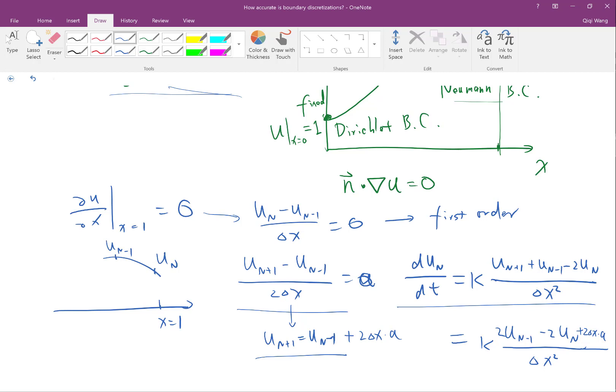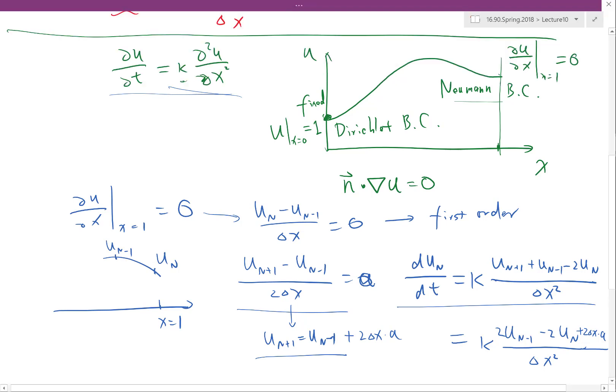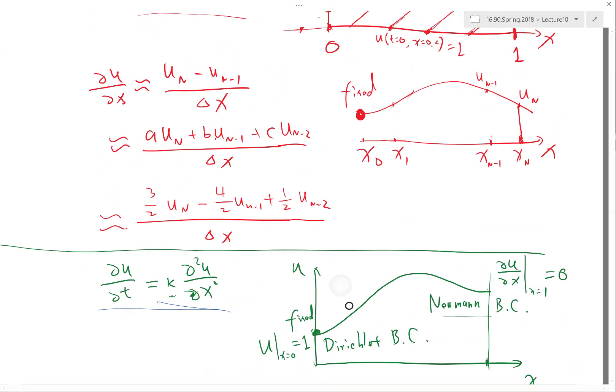So that's a way to discretize the Neumann boundary condition without what we call increasing the stencil size of the operator. Without actually extending the ODE's dependency to beyond the immediate neighbor. So this equation still only depends on u_n and u_{n-1}. All the previous equations all depends only on itself and its immediate neighbors. Which is actually not true if you use this discretization here. Any questions? No? Okay. That is the end of this tema.